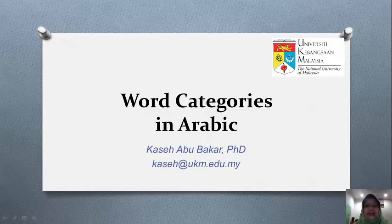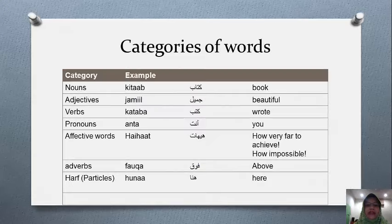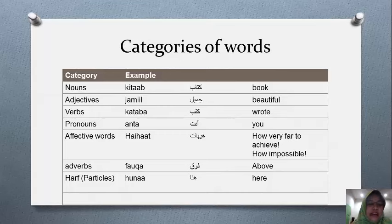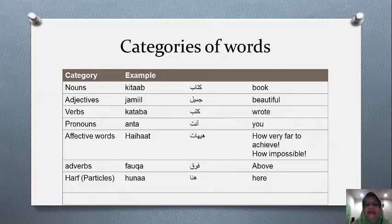Today's lesson is on word categories in Arabic. Like any other language, the categories of words are quite universal, and Arabic has the categories that other languages have — for example, nouns, adjectives, verbs, pronouns, affective words, adverbs, and particles. A noun would be something like 'kitab' (book).